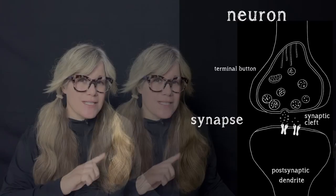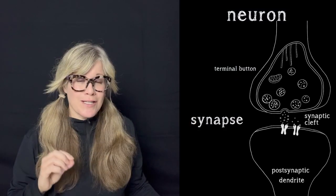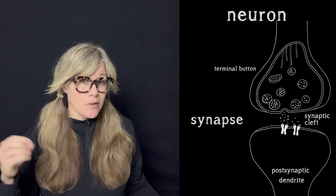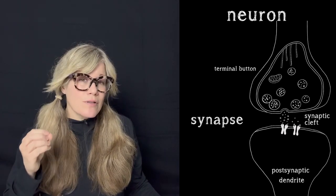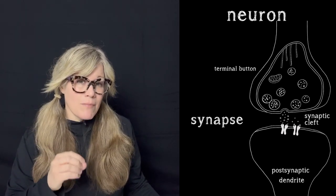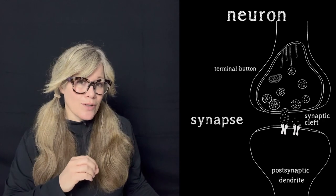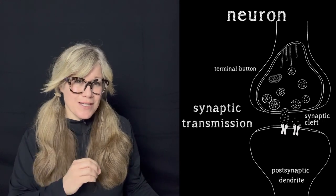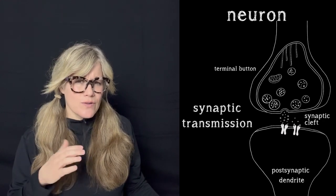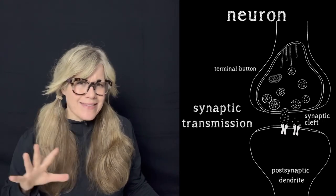Neurotransmission is, as I've said, a regulatory process your body relies on to keep it in balance, to keep it in homeostasis. So try to hold that bigger picture in mind as we get into the details. Let's begin with our typical neuron communicating to another neuron. The typical communication modality of a multipolar neuron is synaptic transmission — so we're at the synapse.